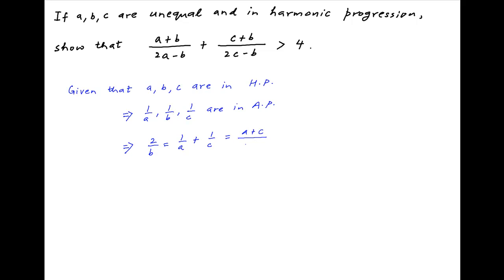The right-hand side can be written as (a + c) / (ac), and therefore b is equal to 2ac divided by (a + c).